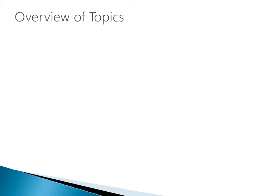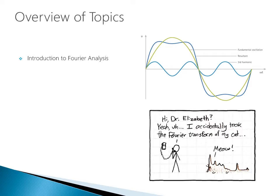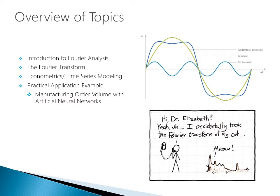The overview of topics we're going to get into today is that we'll first start with an introduction to Fourier Analysis — what is the concept, how does it work, and how can we leverage it for machine learning? We will then move into the Fourier Transform, discuss its use in econometrics and time series modeling, and conclude with a practical application creating a time series prediction on manufacturing order volume incorporating artificial neural networks.